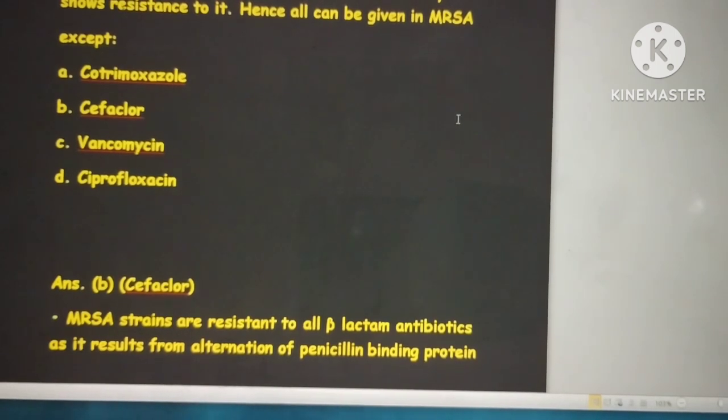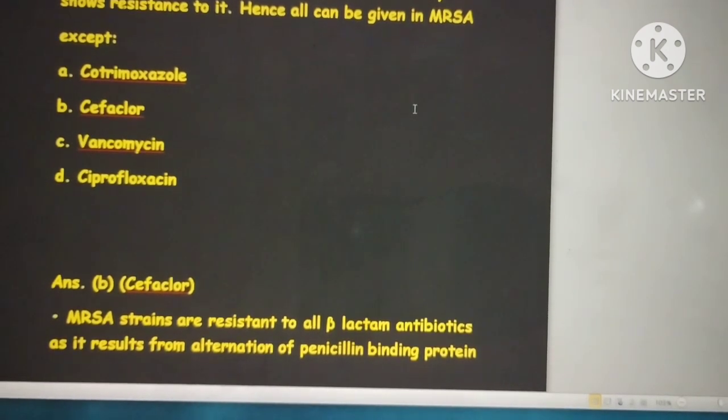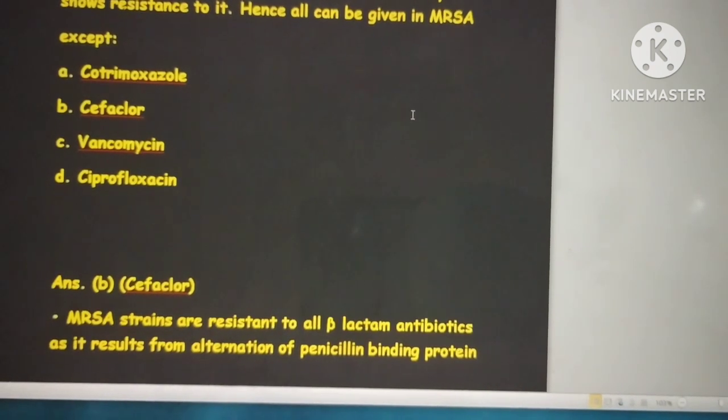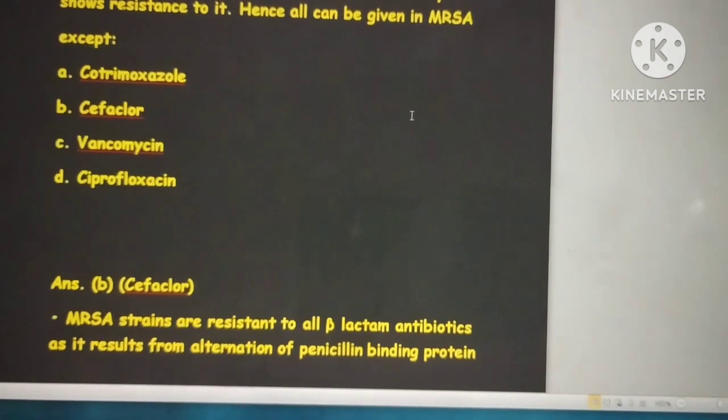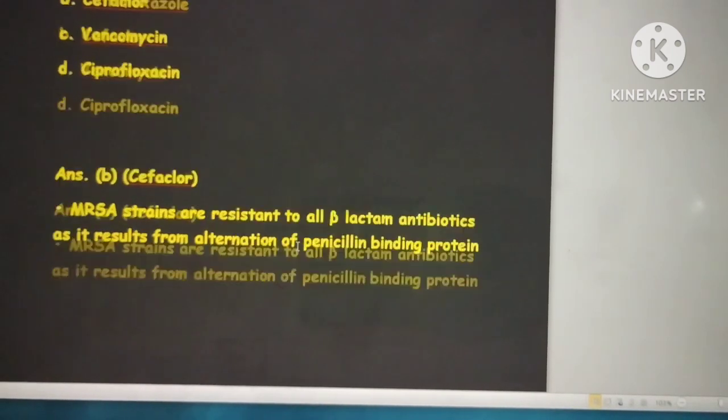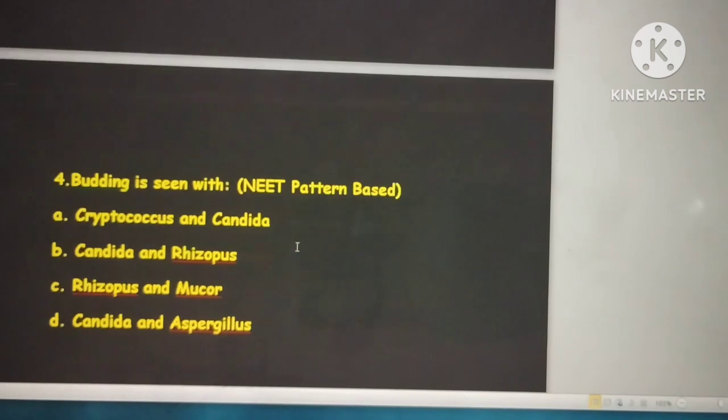We discussed in the last session that methicillin and oxacillin can be used, but the most commonly used is cefoxitin because it is a stable drug used for detecting methicillin resistant Staphylococcus aureus. If they ask which drug to use to find out MRSA, the main option is cefoxitin.